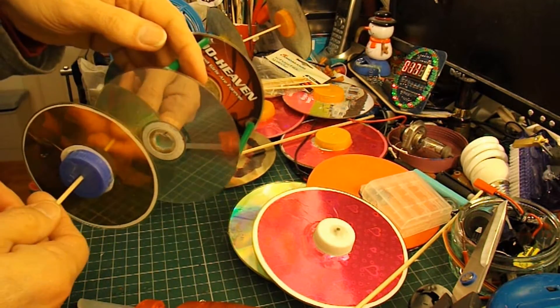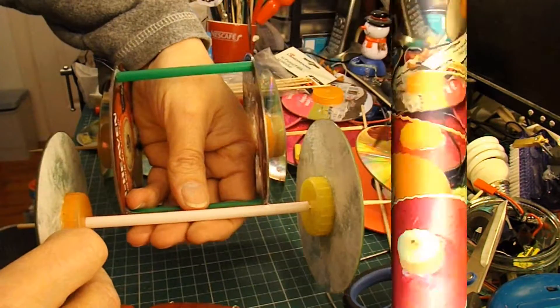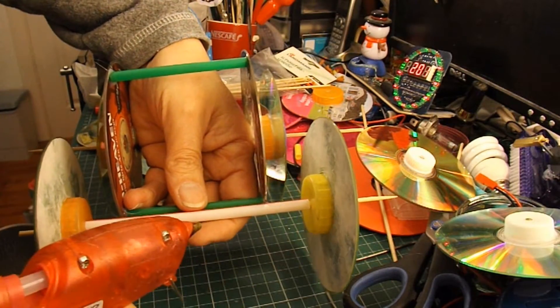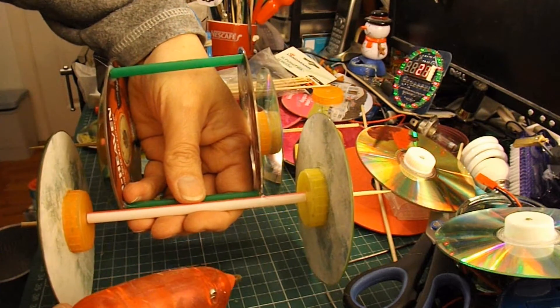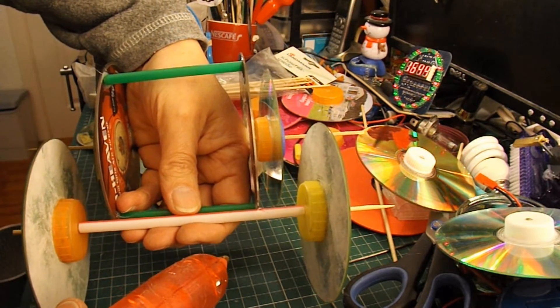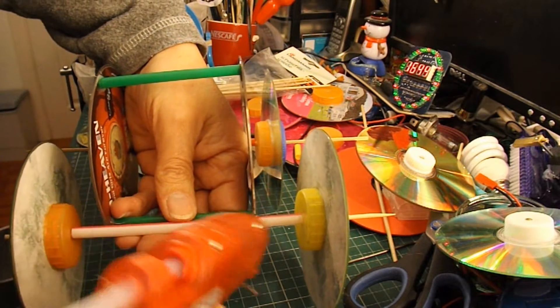So that's the front axle. Right, we'll make the rear wheels far enough apart so they don't foul on the front wheels.